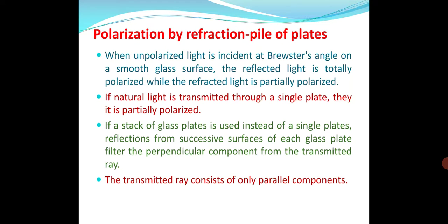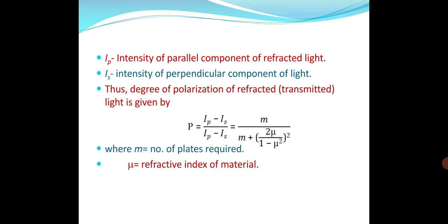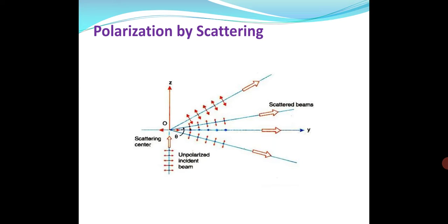Polarization by refraction — the pile of plates method. We arrange different glass plates here. When unpolarized light is allowed to fall on this pile and the reflected light makes 90 degrees, at an angle of incidence of 57 degrees, we can easily determine that nearly polarized light is obtained at the output.